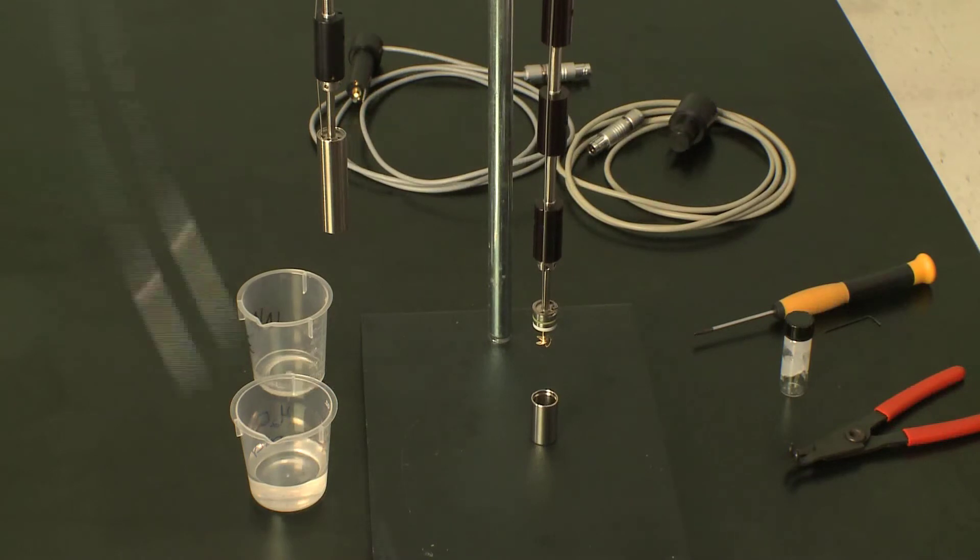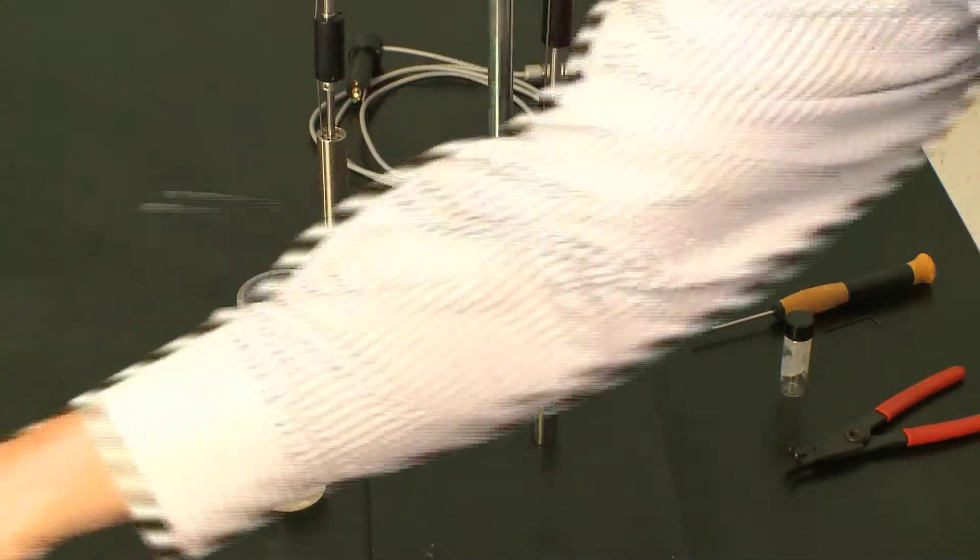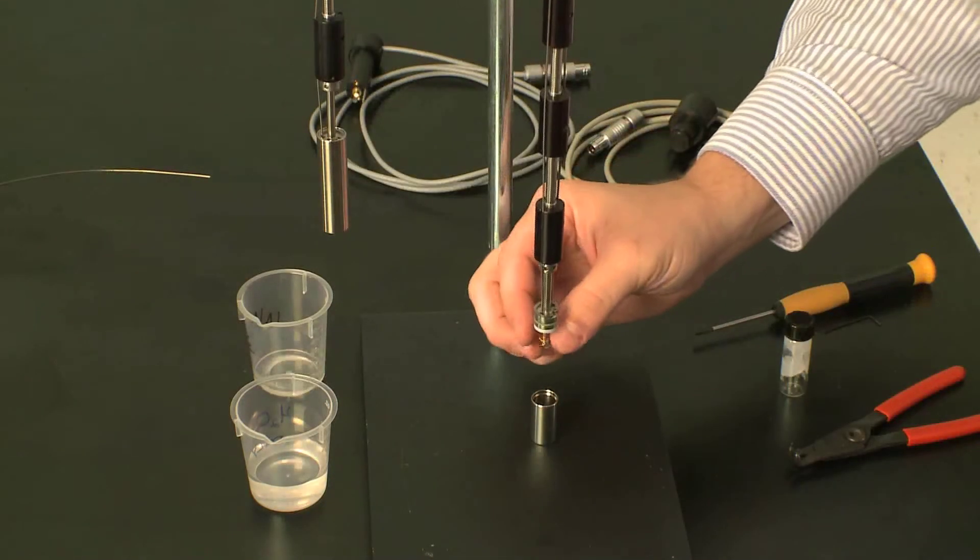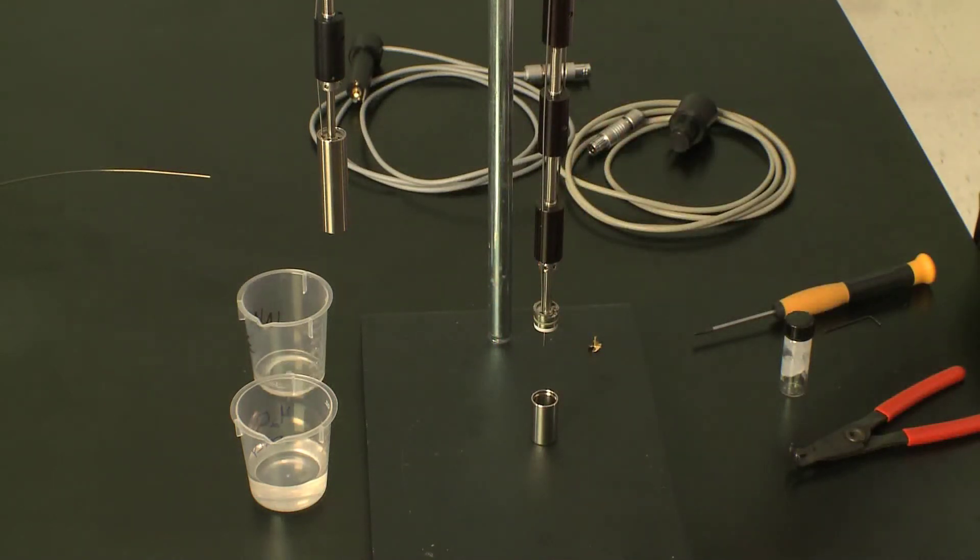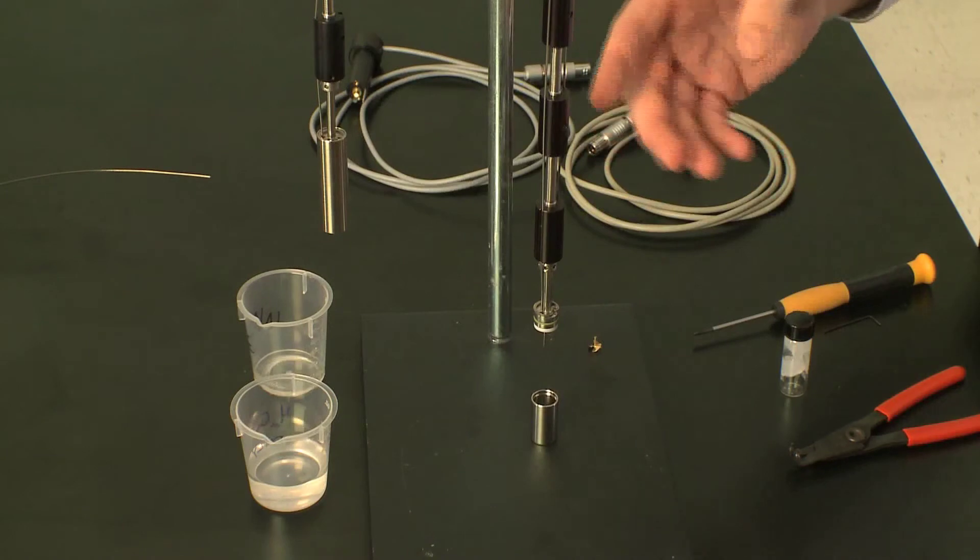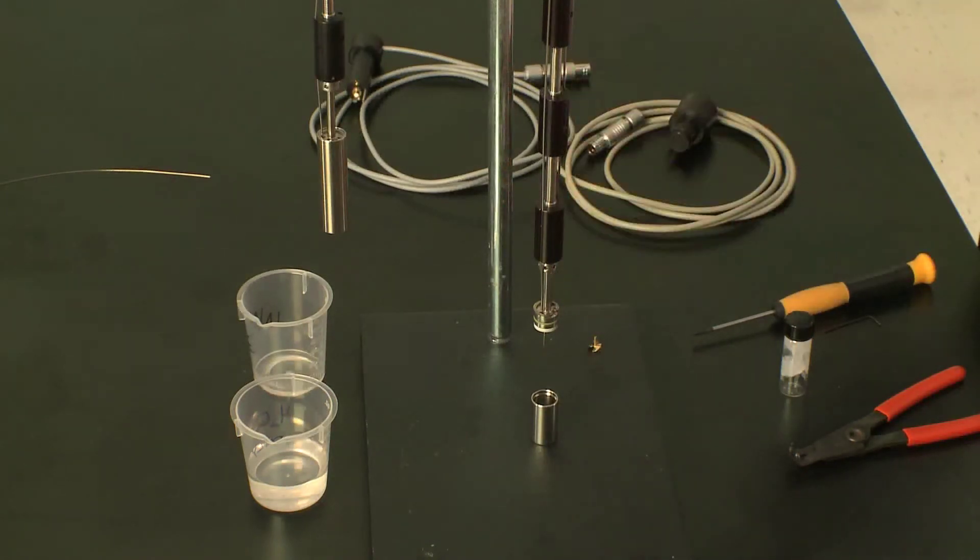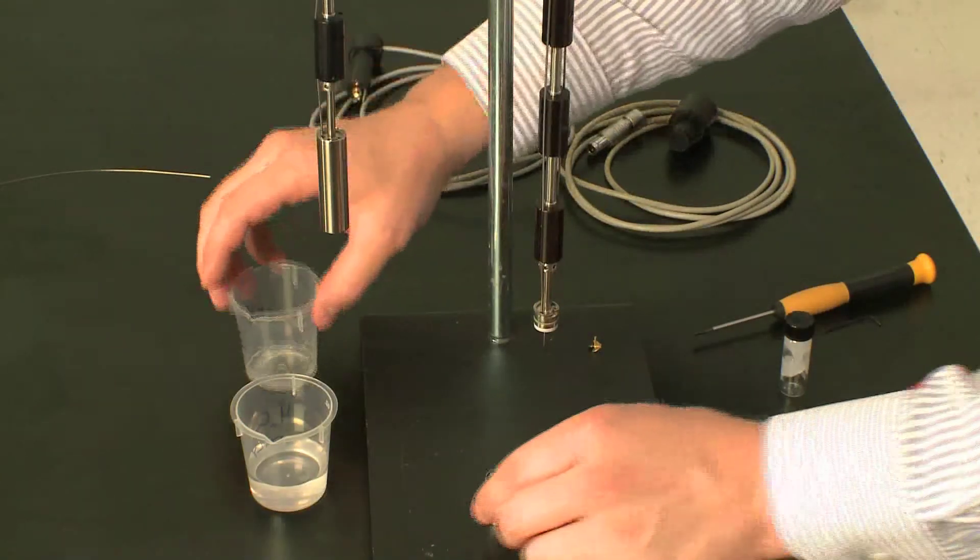Now we have the stirrer height and cannula height adjusted. We have to wet the central shaft of the ITC ampule. Wetting the shaft is important because you have a large dead space above your sample, and you don't want any evaporation to occur during your experiment.